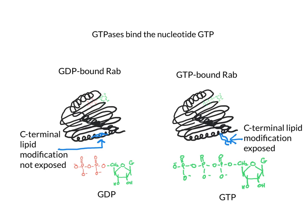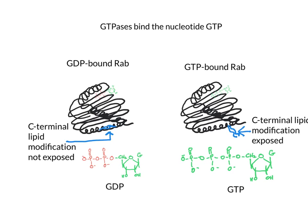When RABs are GTP-bound, there is a lipid modification at the C-terminus of the protein that is exposed. Conversely, when GTP gets hydrolyzed to GDP, that lipid modification gets tucked away and is no longer available. This is important for RAB function — one of the first things that happens is that RABs will bind to a membrane when GTP-bound.